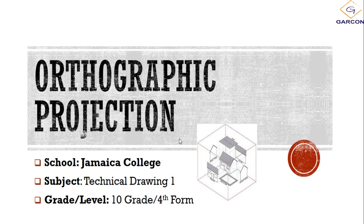Welcome. Today we will be looking at orthographic projection, which is basically the sister or cousin to isometric projection. We have already done isometric projection. Isometric drawings are presentation or pictorial drawings which show you a picture view of a completed object — what it will look like when completed. Orthographic projection is the engineering drawing which gives the manufacturer an idea of what they are creating, and shows the client what they will be getting.